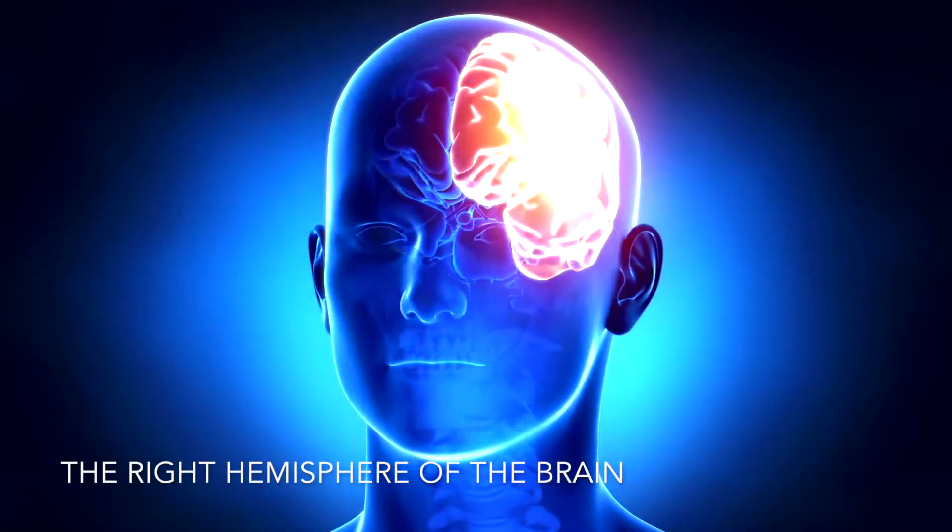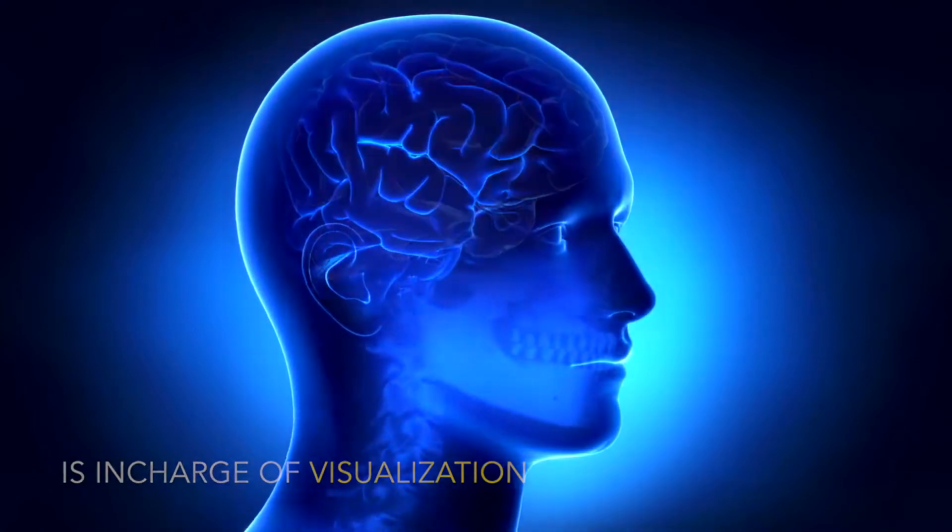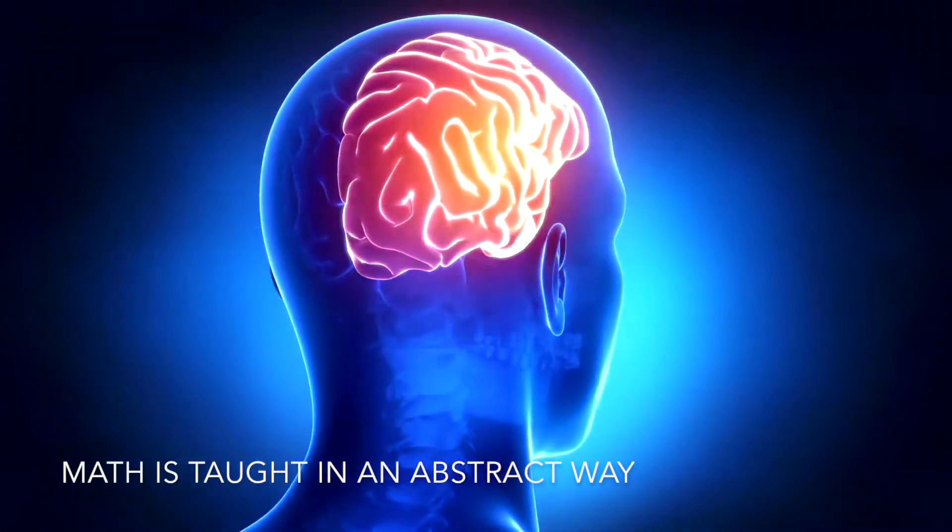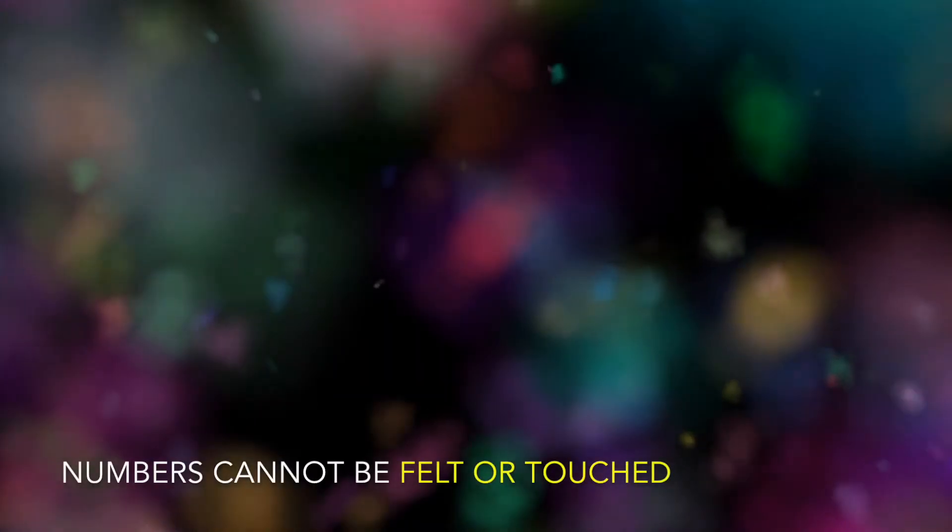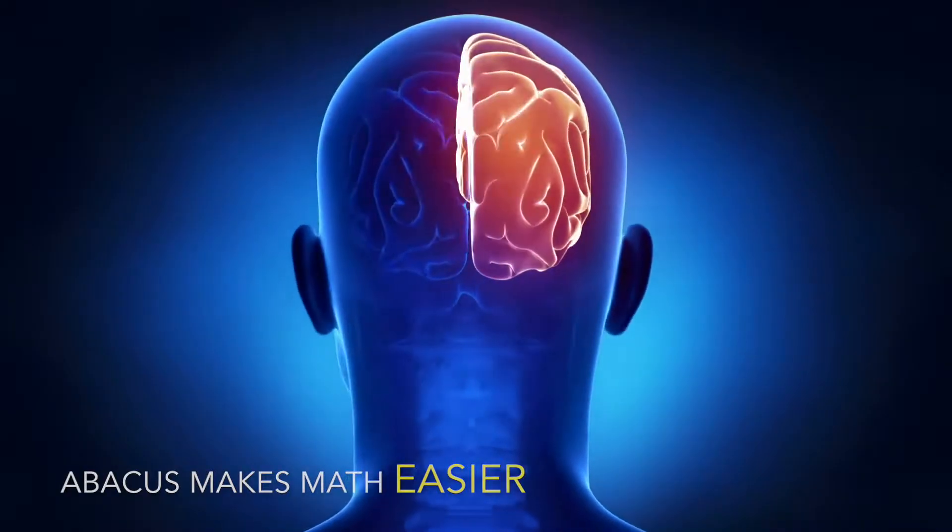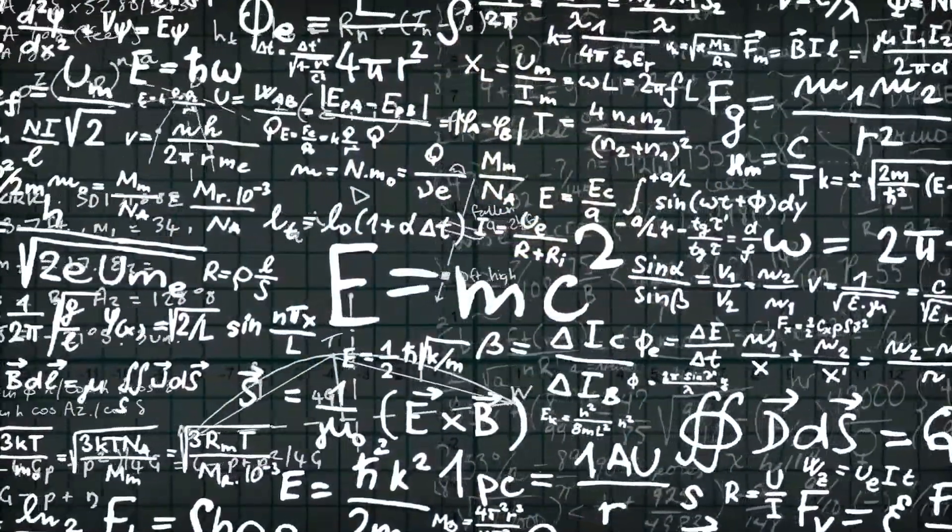Whole Brain Development. The right hemisphere of the brain is in charge of visualization. Math is taught in an abstract way. Numbers cannot be felt or touched. The abacus makes math easier since numbers can now be visualized.